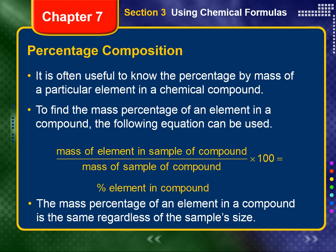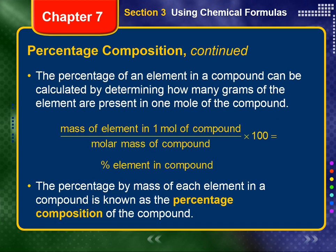The mass percentage of an element in a compound is the same regardless of the sample's size. Therefore, a simpler way to calculate the percentage of an element in a compound is to determine how many grams of the element are present in one mole of the compound, then divide this value by the molar mass of the compound and multiply by 100.